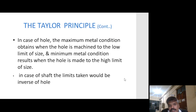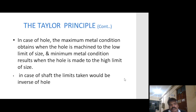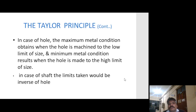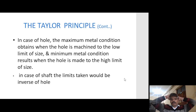In the case of a hole, the maximum metal condition is obtained when the hole is machined to the low limit of size, and the minimum metal condition results when the hole is made to the high limit of size. The low limit of size means maximum metal condition. In the case of a shaft, the limits taken are the inverse of those for a hole. The gauge checks all dimensions in what is called the maximum metal condition, and the minimum metal condition corresponds to the high limit of size.